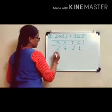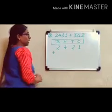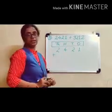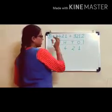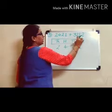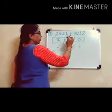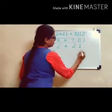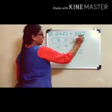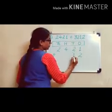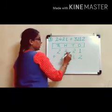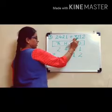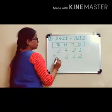Put this plus sign and we will do the same method with the second number. Our second number is 3,212. From this number we write 2 in the ones column, 1 in the tens column, 2 in the hundreds column, and 3 in the thousands column.